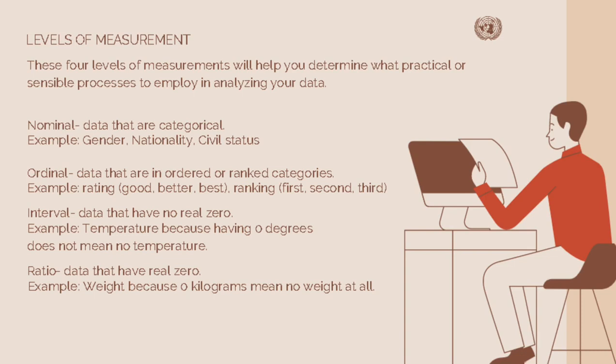Next is ordinal — this is data that are in ordered or ranked categories. Examples include ratings like good, better, or best, and rankings like first, second, or third. Next is interval — this is data that have no real zero. For example, temperature, because having zero degrees does not mean there is no temperature. Next is ratio — this is data that have a real zero, like weight, because zero kilograms means no weight at all.